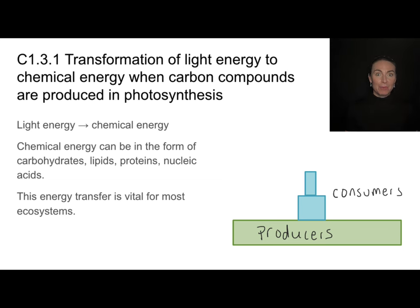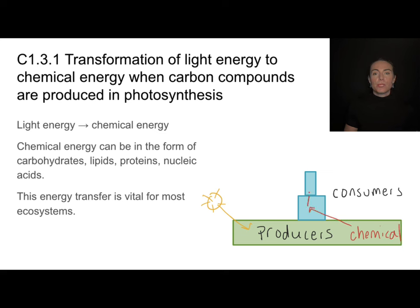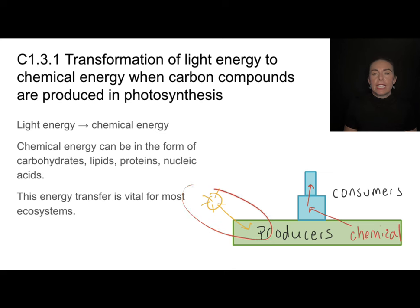One of the awesome things that makes producers awesome is the fact that they can take light energy and transform it into chemical energy. That is super important because they form the base of the food chain. They're taking light energy and converting that into chemical energy, and that chemical energy is then passed along to consumers and through trophic levels. Even though a little bit is lost at each step, this initial transformation of light to chemical is essential for food chains.